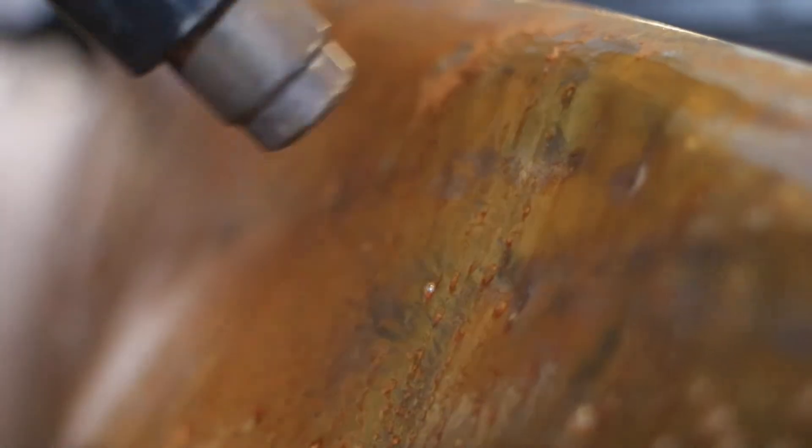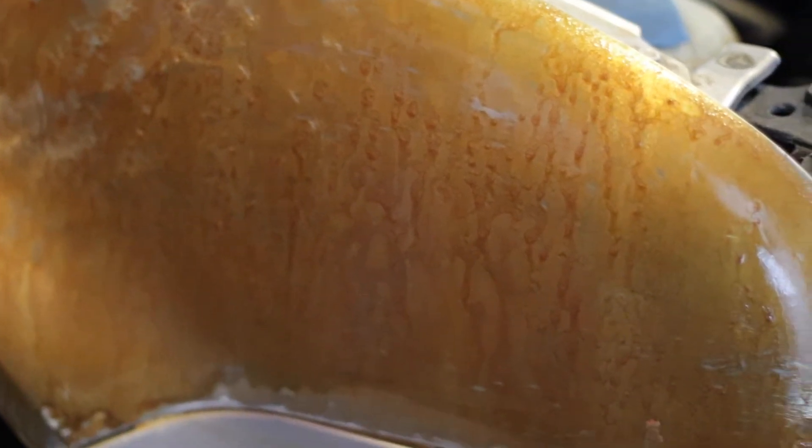It's a thousand degrees. Don't melt the salt. So we use the heat gun to speed up the rusting process. The longer it sits, the more it'll rust.